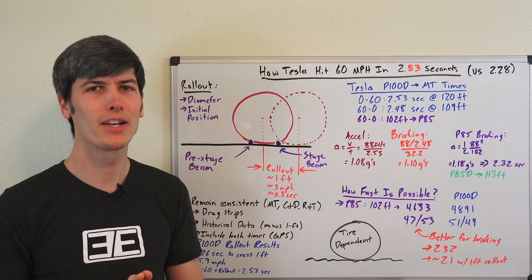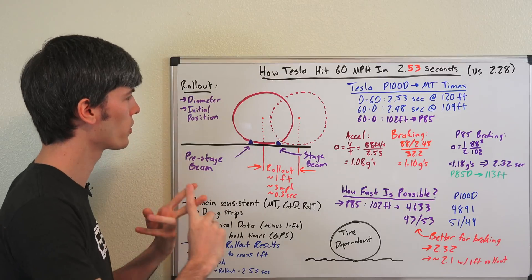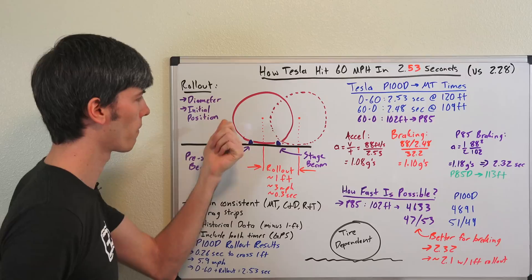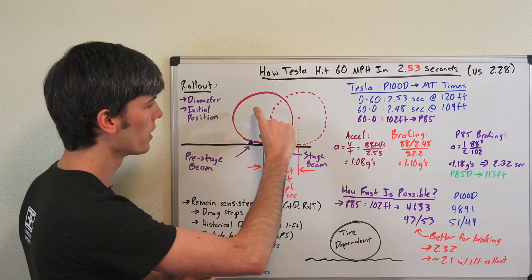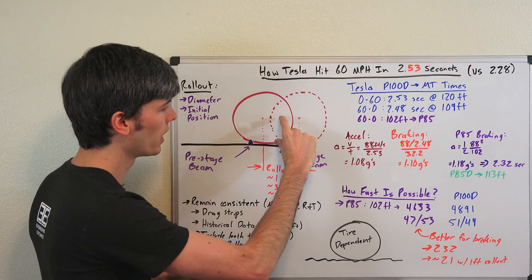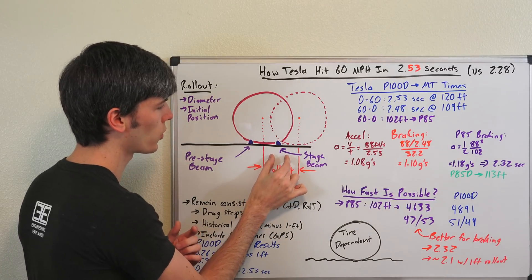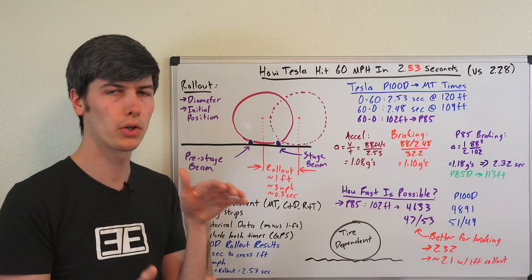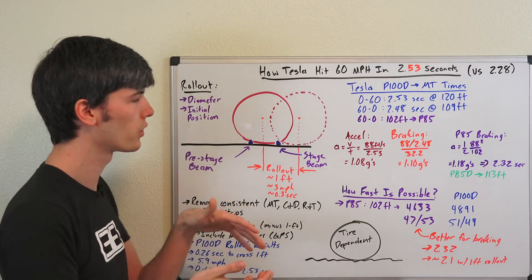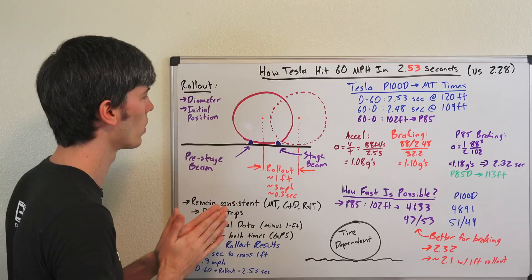Now as you can imagine the rollout of a vehicle can vary and so there's two major factors that can change this. The first being the diameter of the tire. So if you were to have a smaller tire, it would roll off of this stage beam sooner and the overall distance that it traveled would be shorter. So a smaller tire will give you less of a rollout advantage, a larger tire will give you more of a rollout advantage.